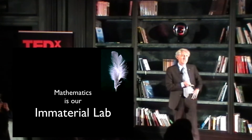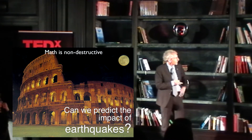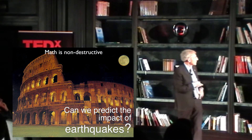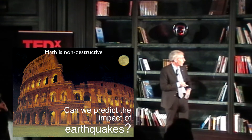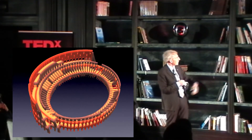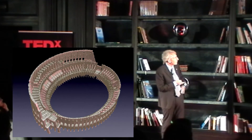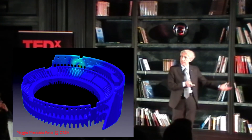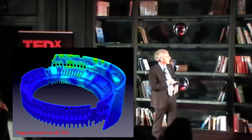Mathematics is a virtual lab — an immaterial lab — and I think this is its most important strength. You can use mathematics to predict the impact of earthquakes on important architectural heritage, like the Colosseum, without any destructive testing. You don't need a real seismic wave; you simulate it mathematically, describe different scenarios, and see how the structure reacts to extreme events.